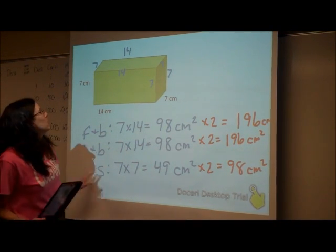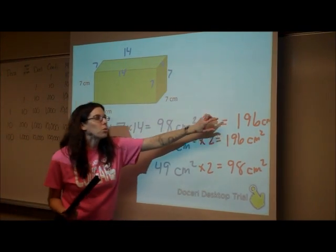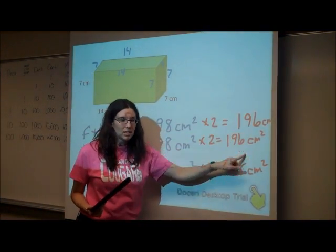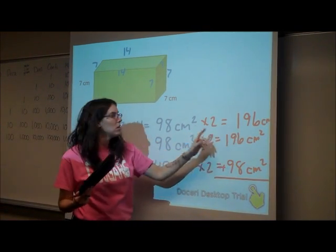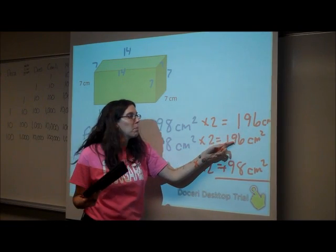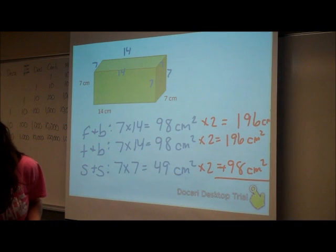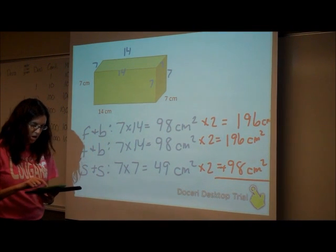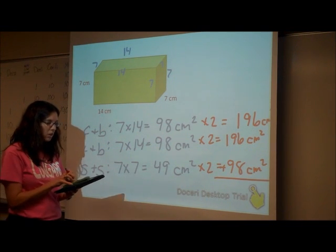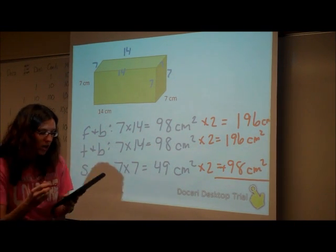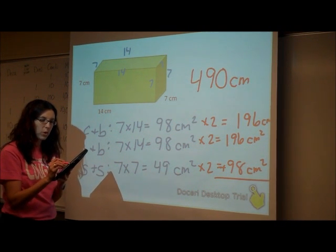To find the total surface area of this rectangular prism, I need to add these numbers together — that gives me the area of the front and the back, the top and the bottom, and the two sides, for all 6 faces. If I add all those up, you get 490 square centimeters.